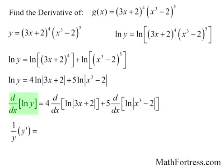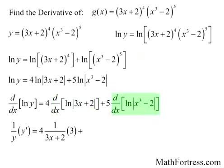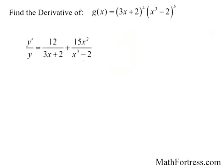Now we take derivatives of both sides. The derivative of the left-hand side equals 1 over y times y prime, after applying the chain rule. The derivative of the natural logarithm of the absolute value of 3x plus 2 equals 1 over 3x plus 2 times 3. Then plus 5 times the derivative of the natural log of the absolute value of x cubed minus 2, which by the chain rule equals 1 over x cubed minus 2 times 3x squared.